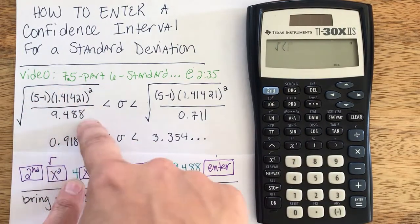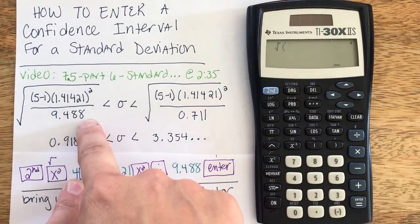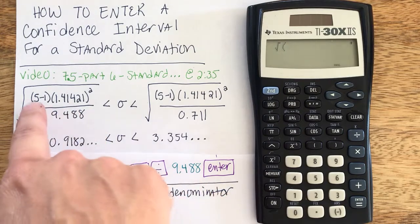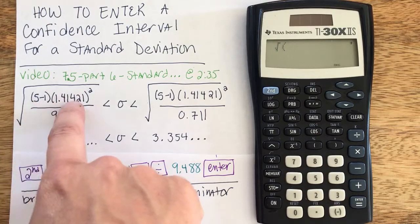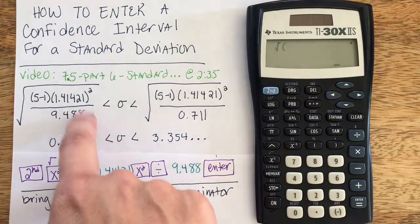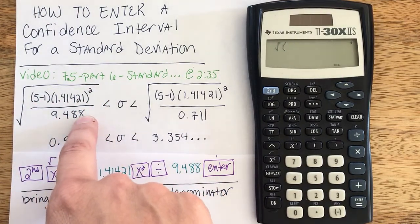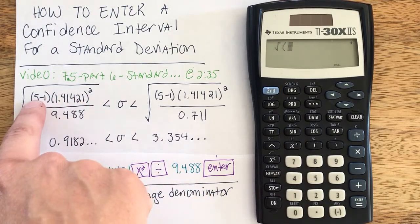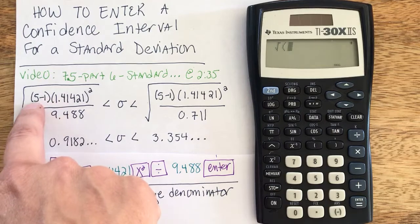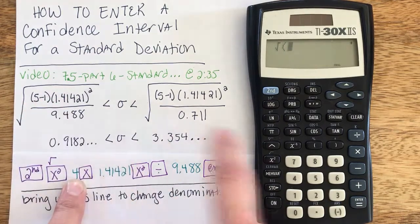I'm now ready to do the interior part of the square root. I've written out in the format following the formula n minus 1 times s squared all over your chi squared table value, but I'm not going to need all of these parentheses. If I go ahead and subtract 1 from the sample size myself, so 5 minus 1 is just 4.